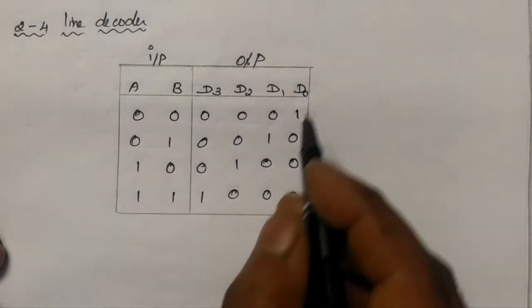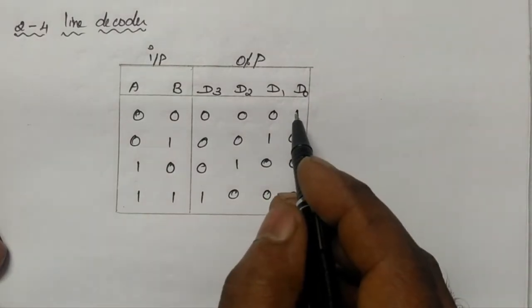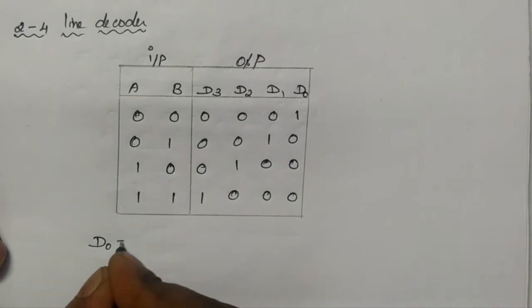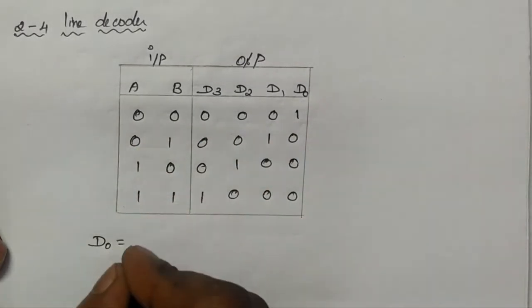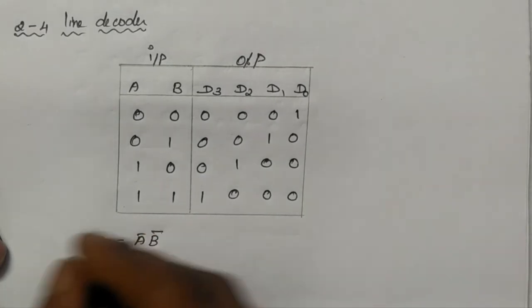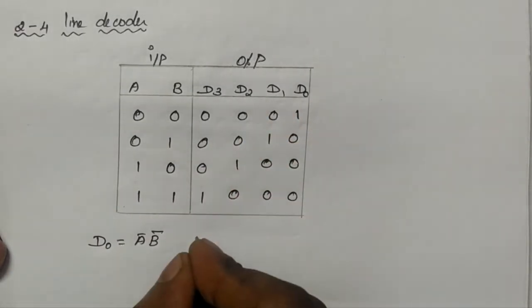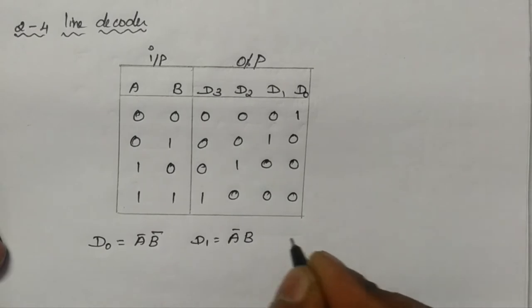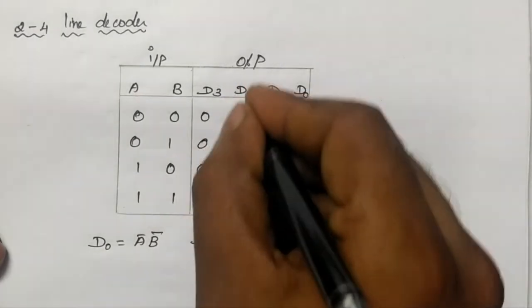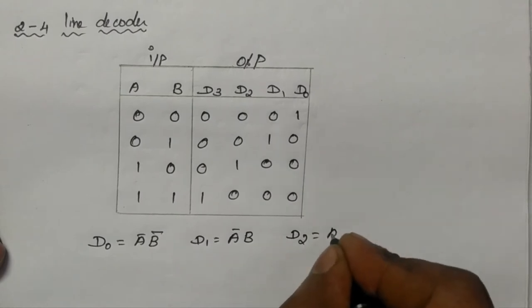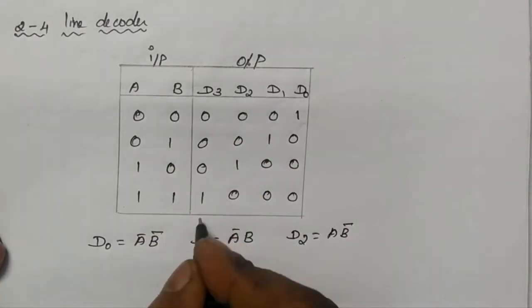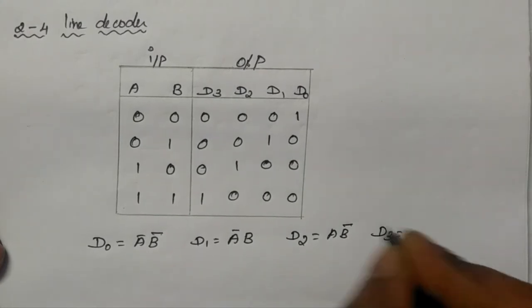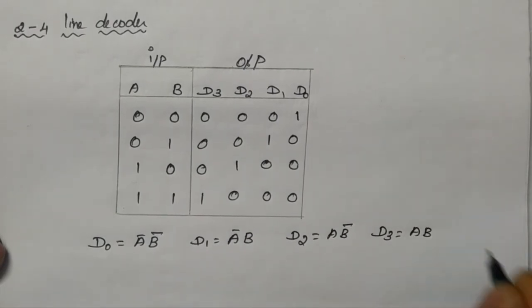Now we will go for the algebraic expression. For D0, the output is 1 when input is 0,0, therefore D0 is equal to A-bar B-bar. For D1, D1 is equal to A-bar B. For D2, D2 is equal to A B-bar. For D3, D3 is equal to A B.